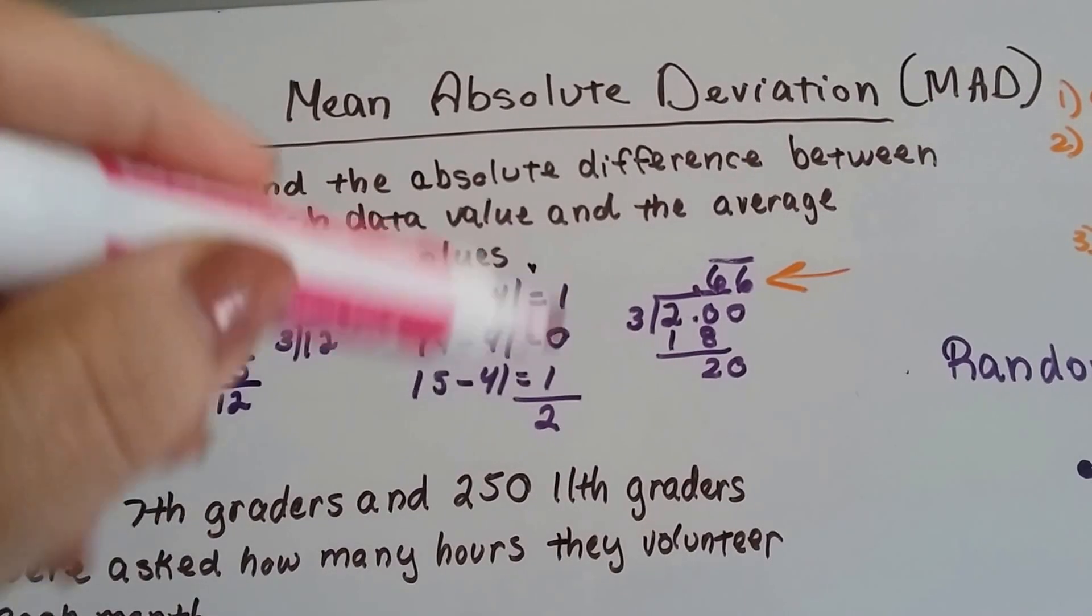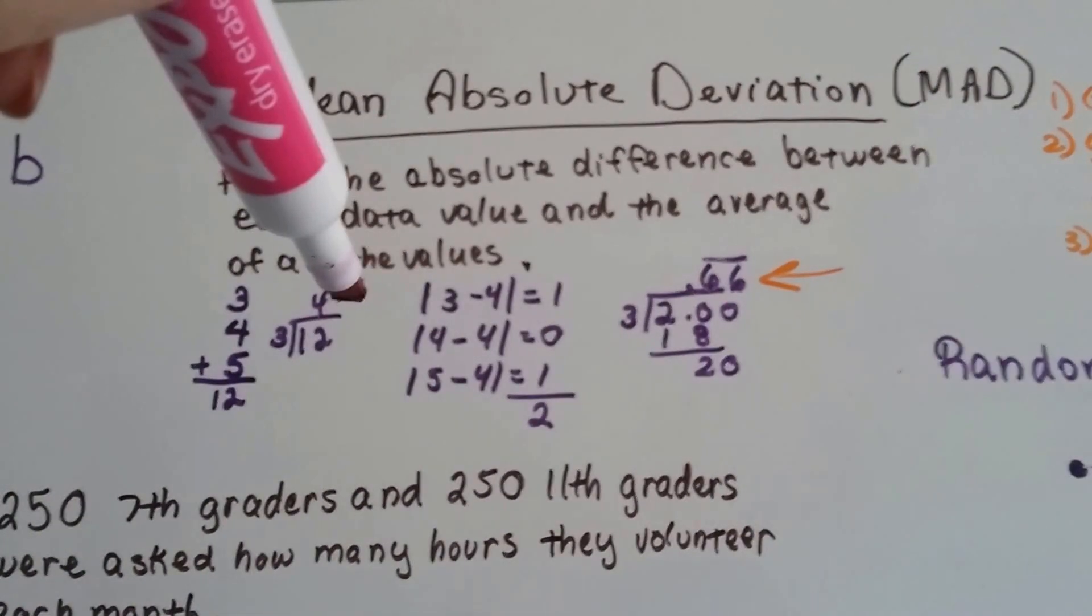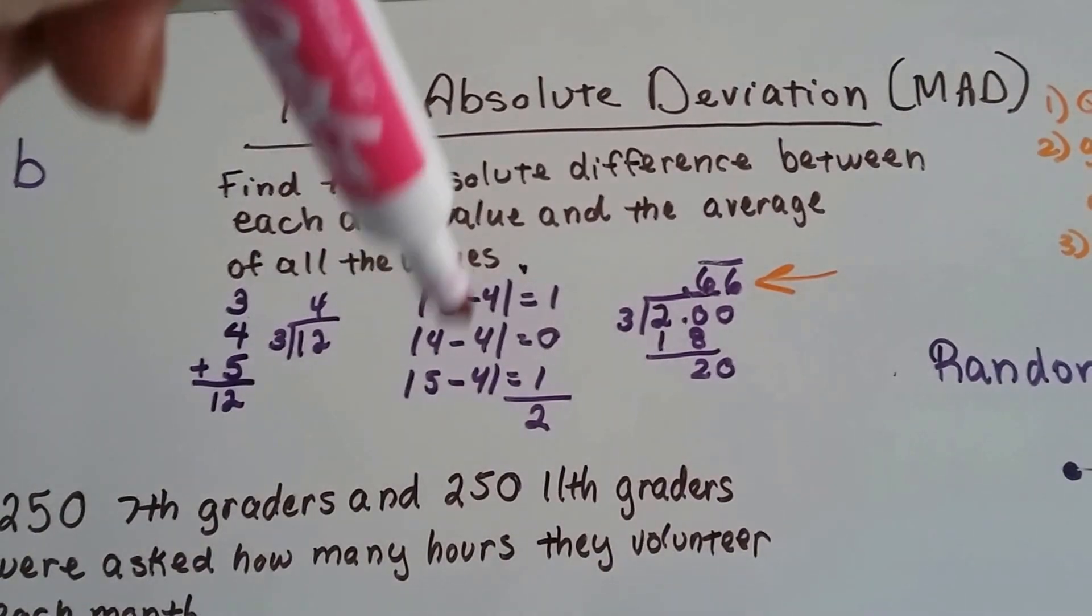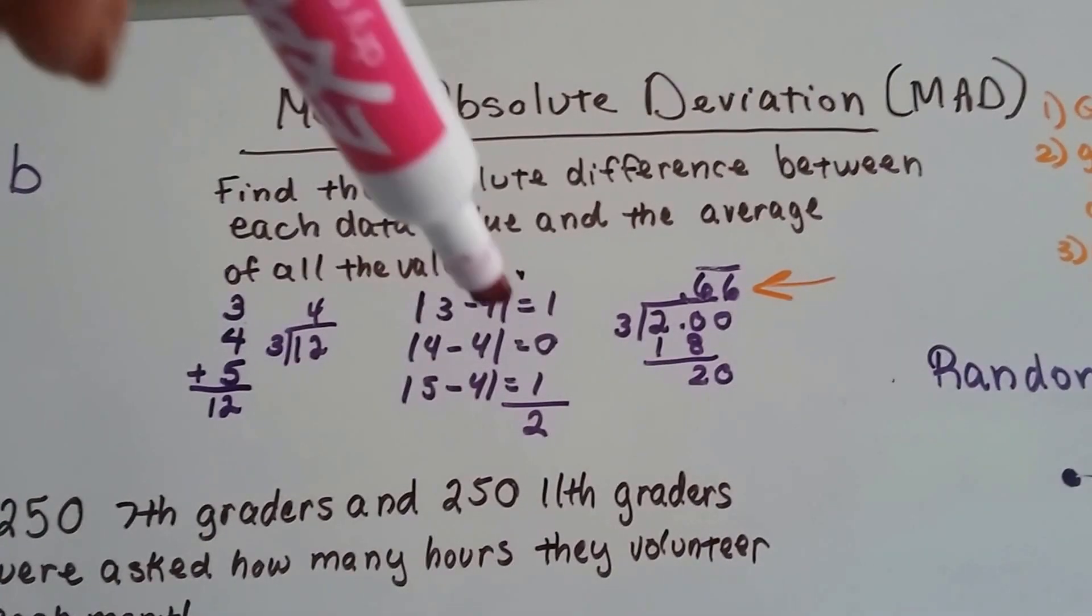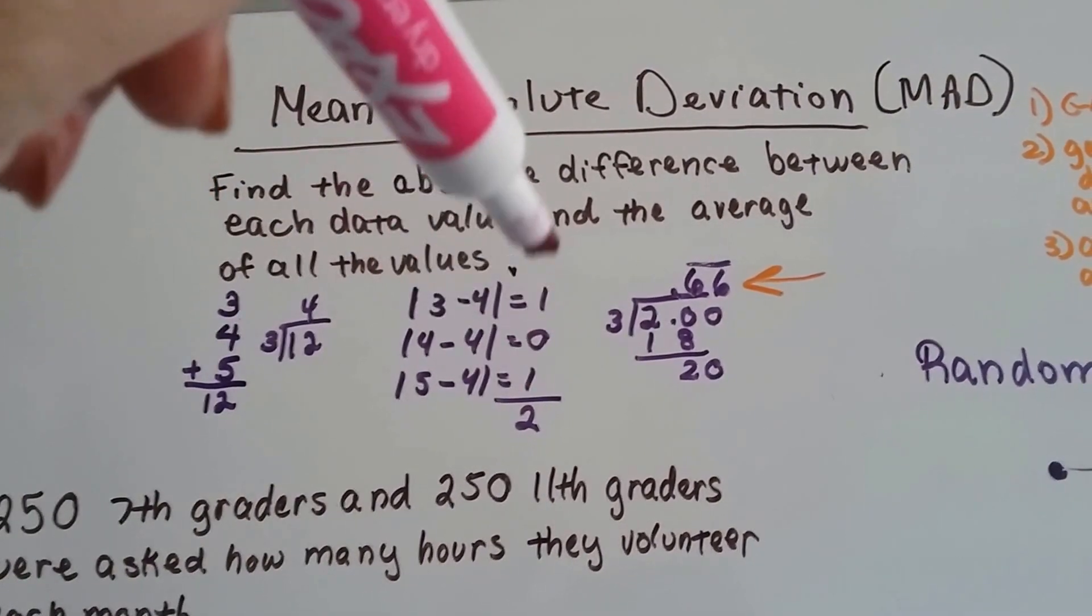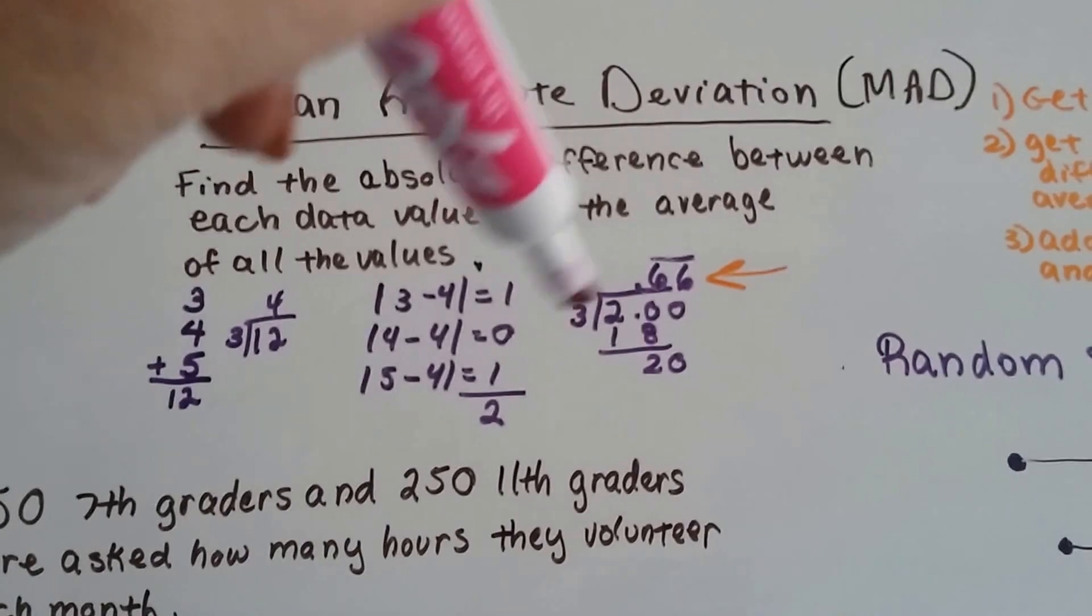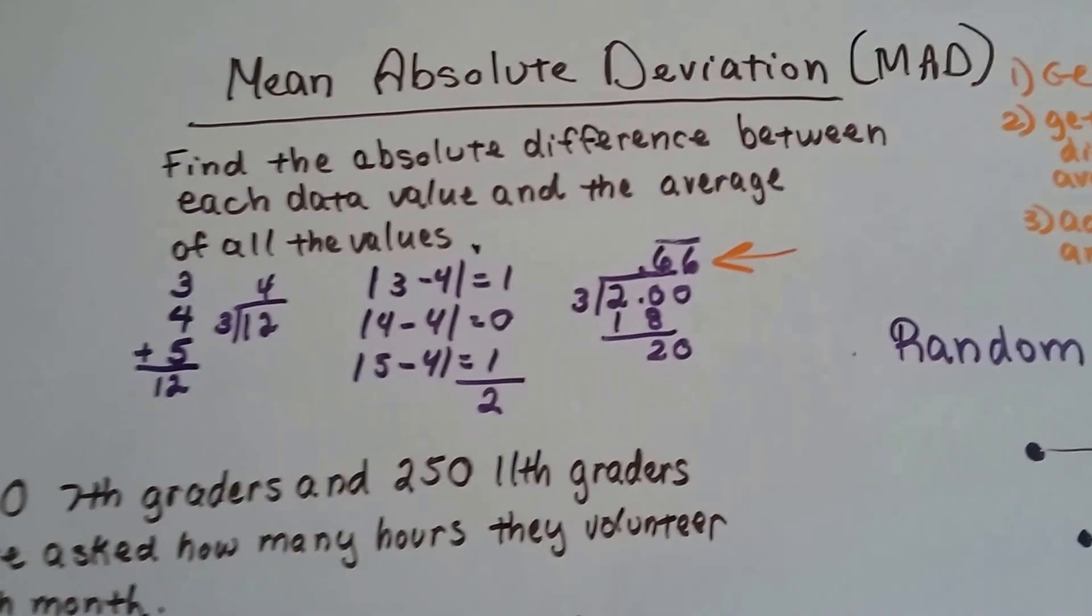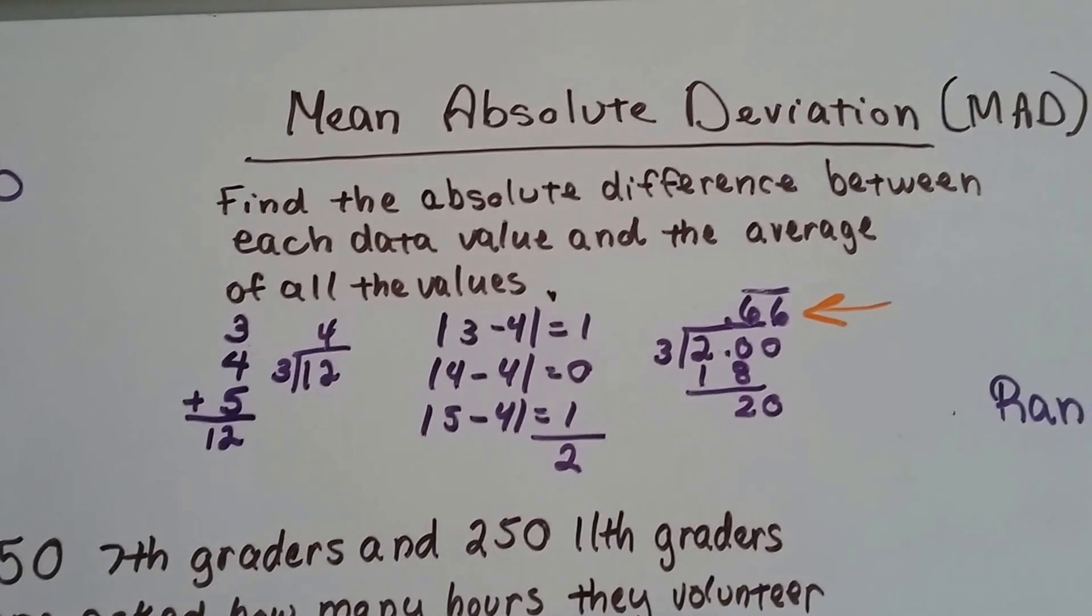Now we add these up and get the average of these values. We found the absolute differences between the data values and the average. Now we're going to get the average of these. So there's 3 digits that total 2. So to get the average, we divide the 2 by 3, and we get 0.66 as a repeating decimal. That is the MAD. That's the mean absolute deviation.